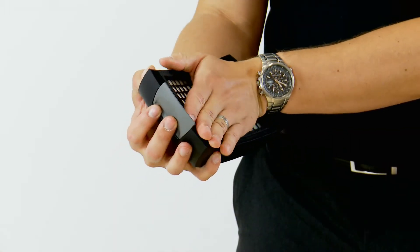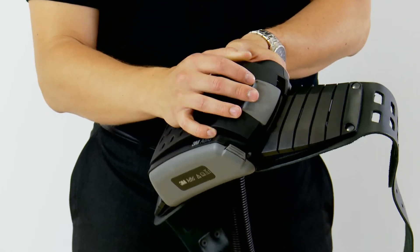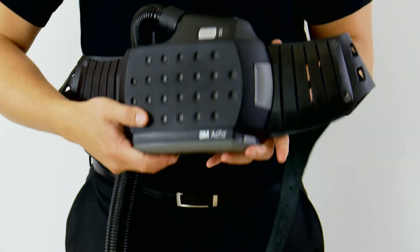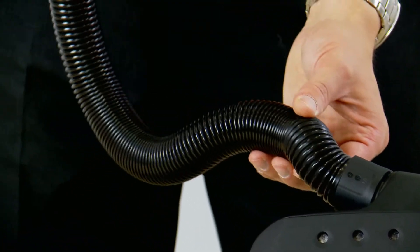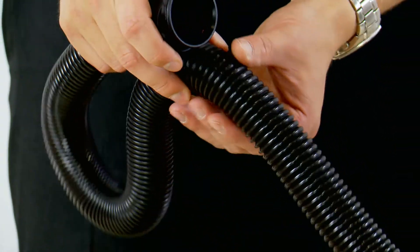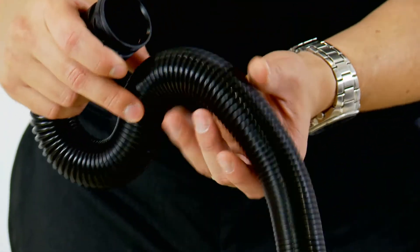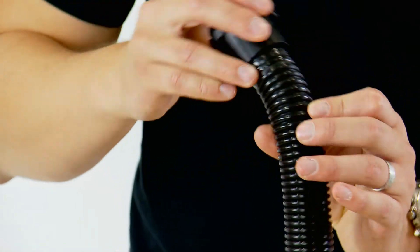Next, check that your filters are fitted correctly. Then, check the condition of the breathing tube. If it is cracked or damaged in any way or there is dirt on the inside of the tube, replace it immediately.